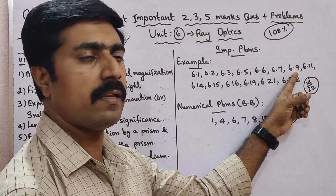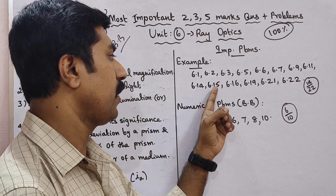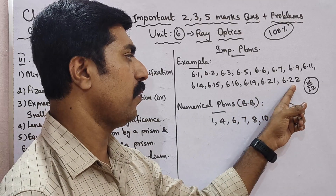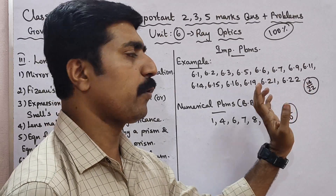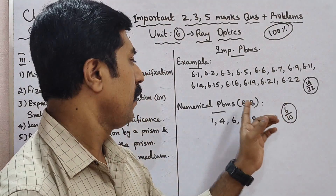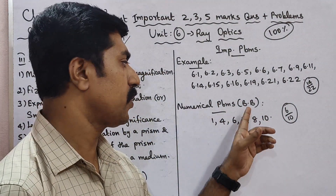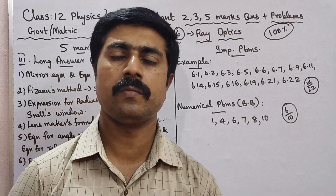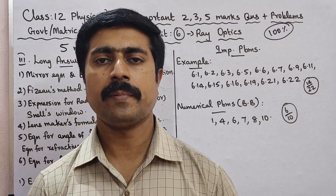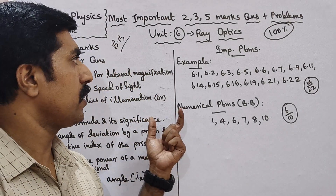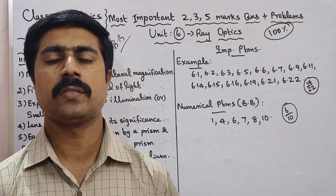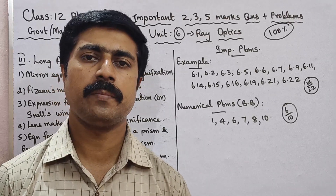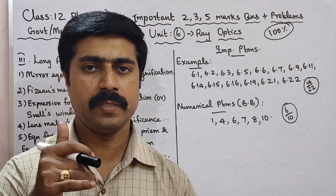For numerical problems, prepare equations 6.9, 6.11, 6.14, 6.15, 6.16, 6.19, 6.21, and 6.22 — a total of 22 problems. From the exercise problems, prepare numbers 1, 4, 6, 7, 8, 10, and from additional problems prepare numbers 5, 8, 10, 12, 13, 14, and 15. All the best, friends — share and thank you!